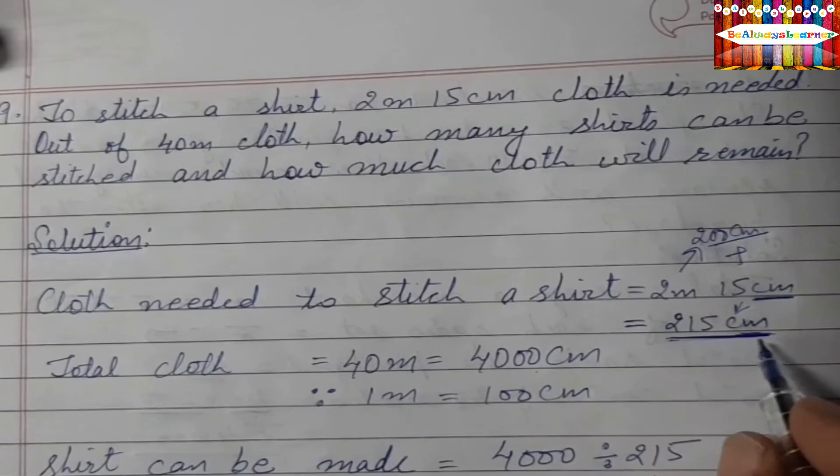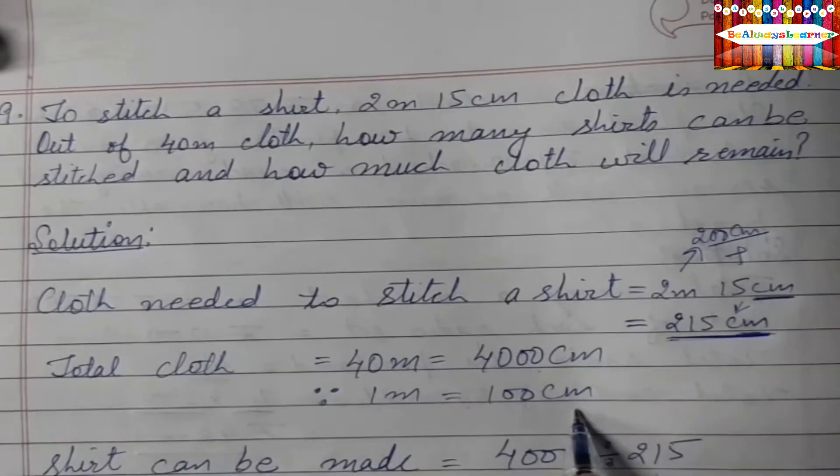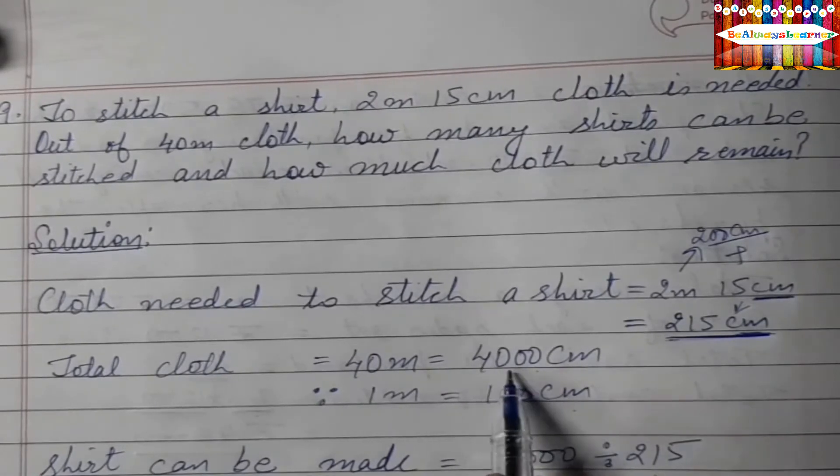Total cloth is equal to 40m. So 1m is equal to 100cm, so we can write it as 4000cm.